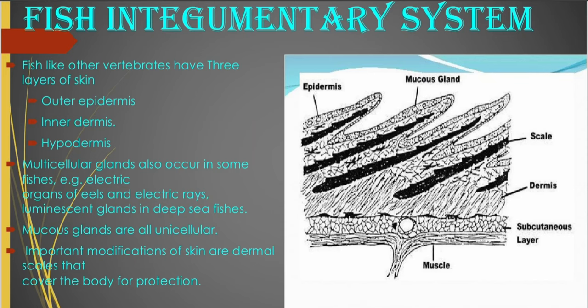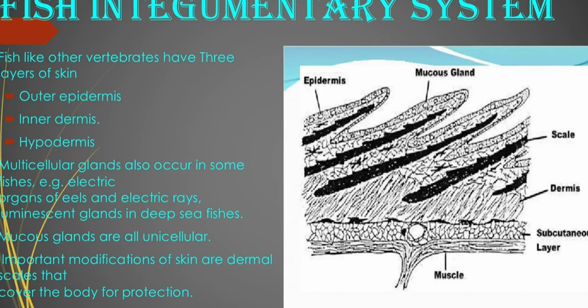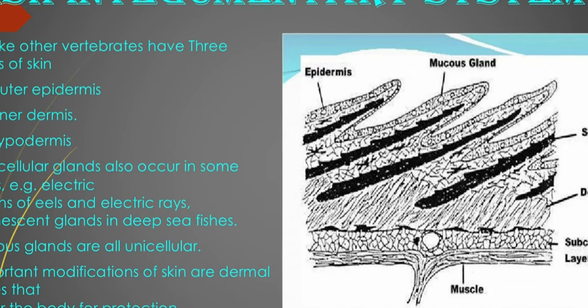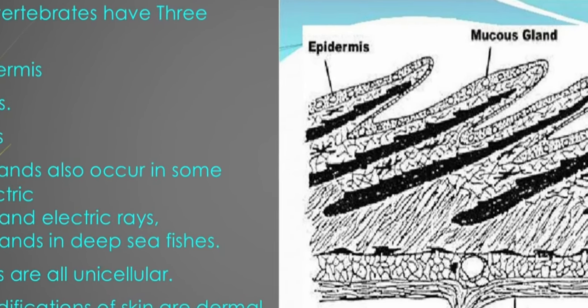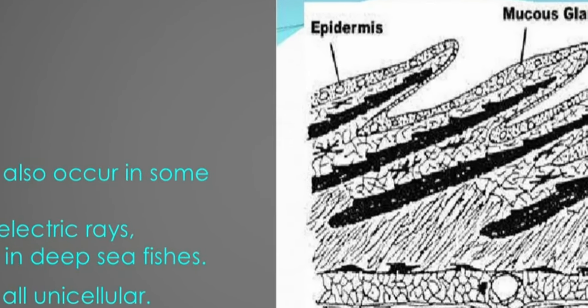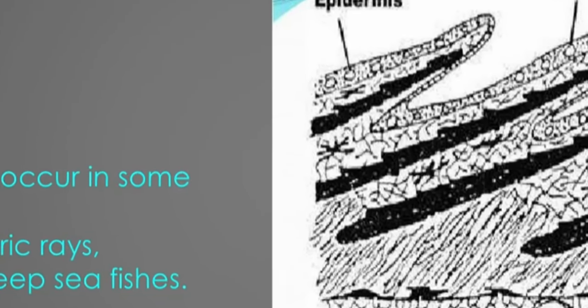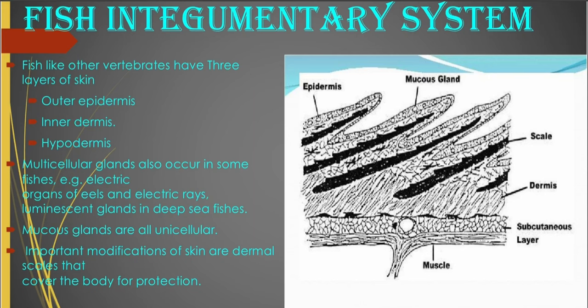Luminescent glands are also present in deep sea fishes. Mucous glands are all unicellular. You have important modifications of the skin in the form of dermal scales that cover the body, and this serves for protection.